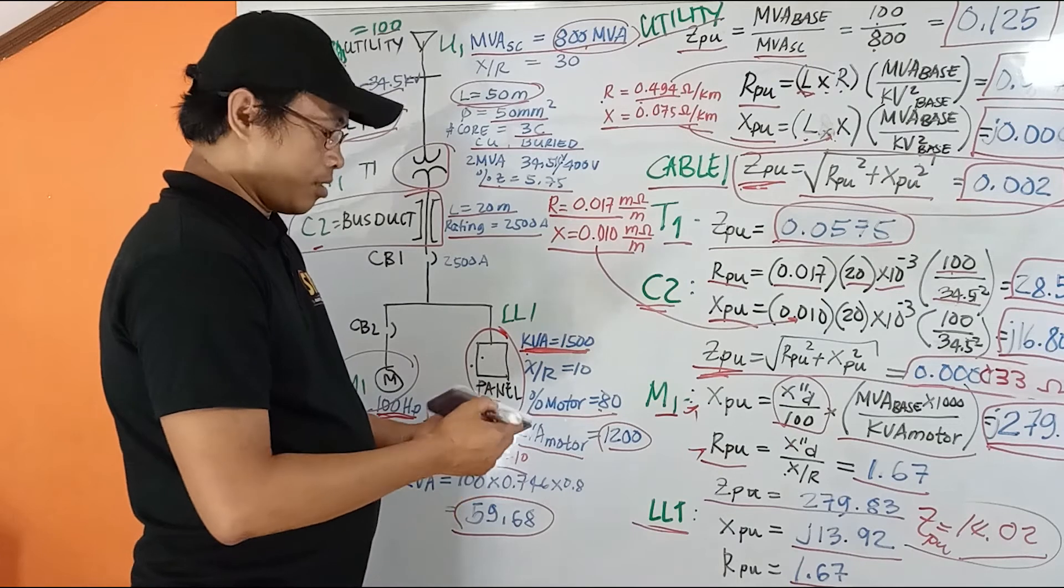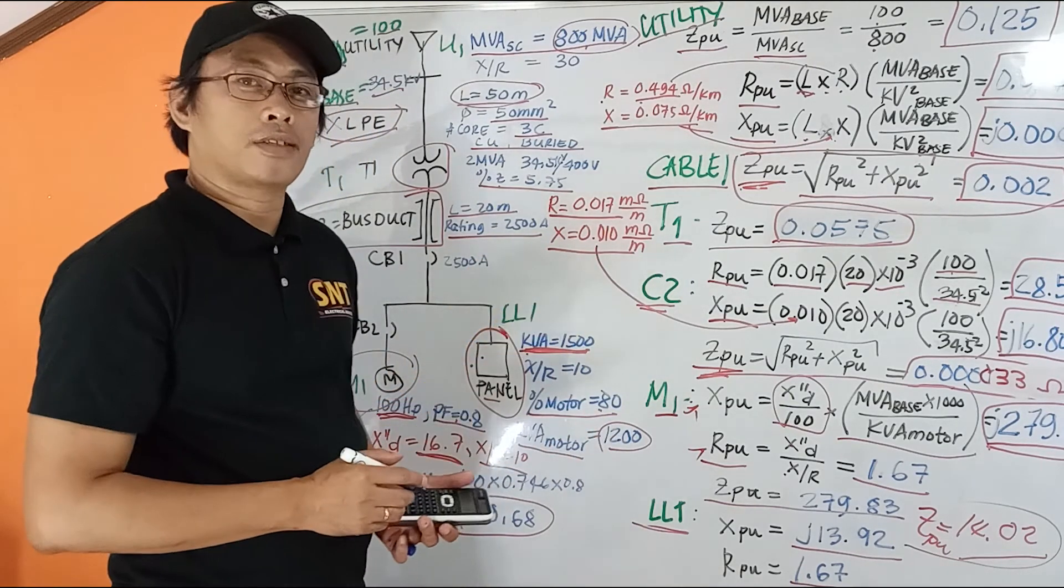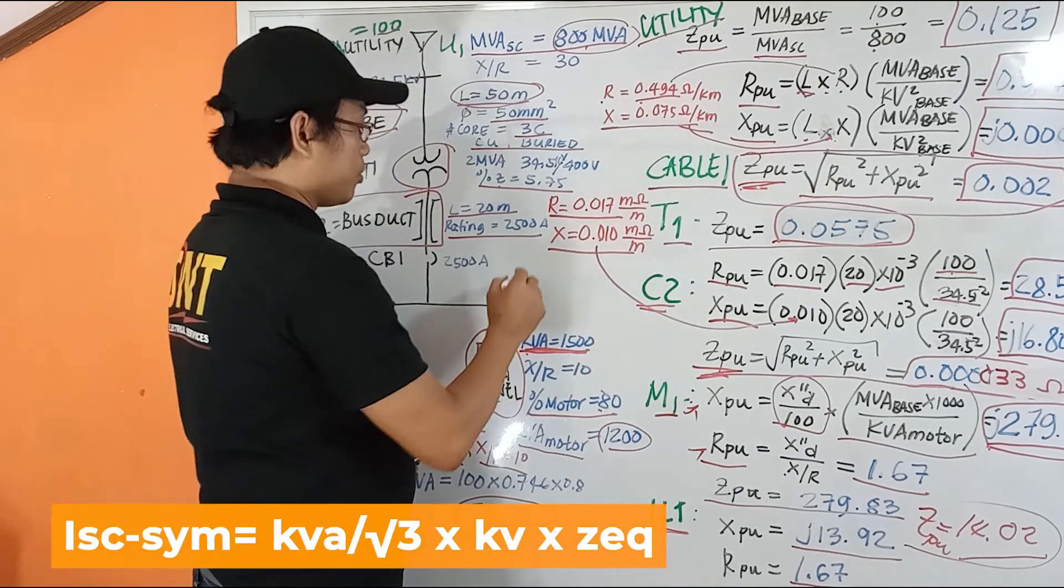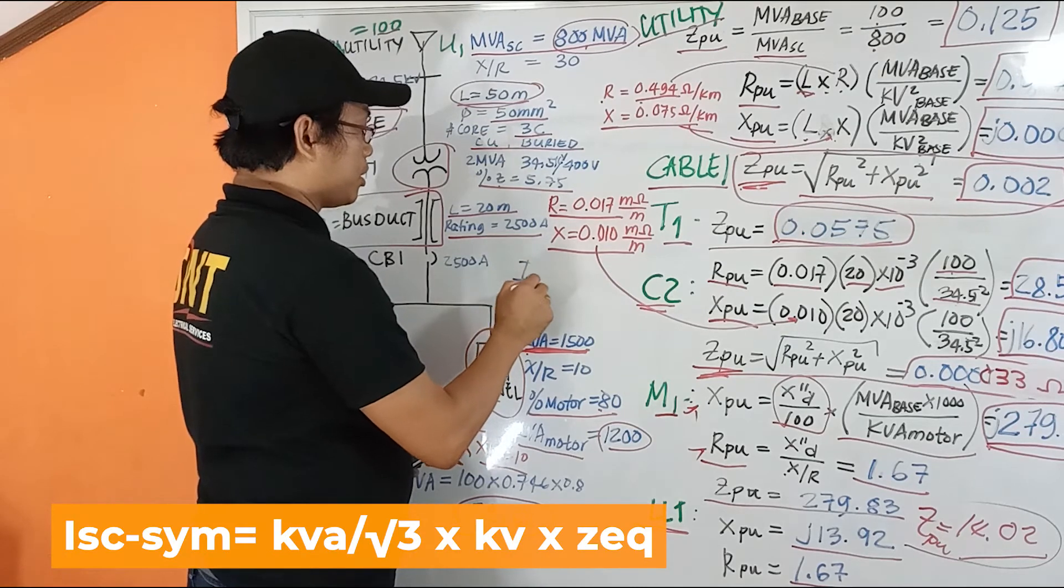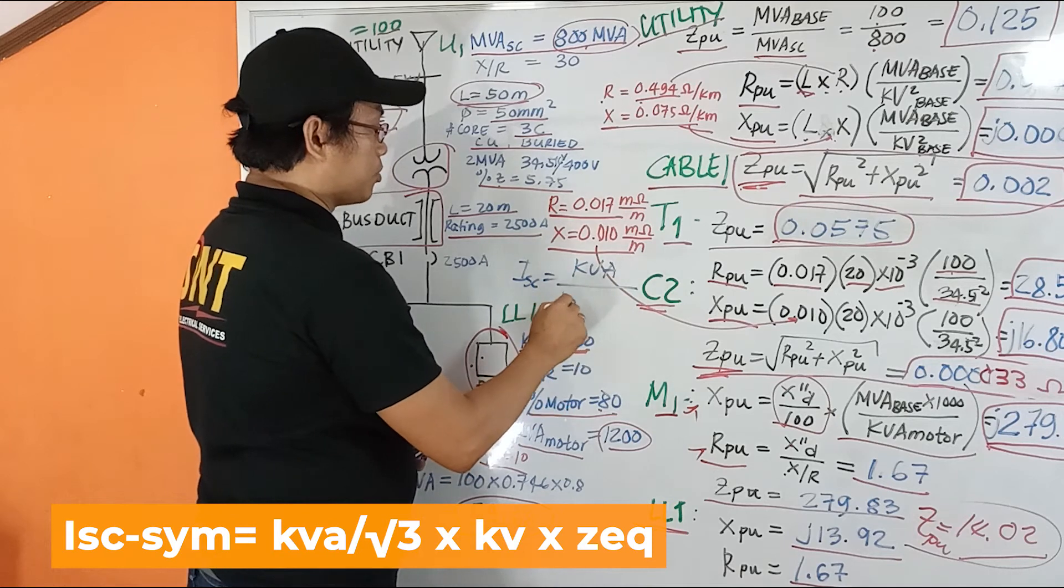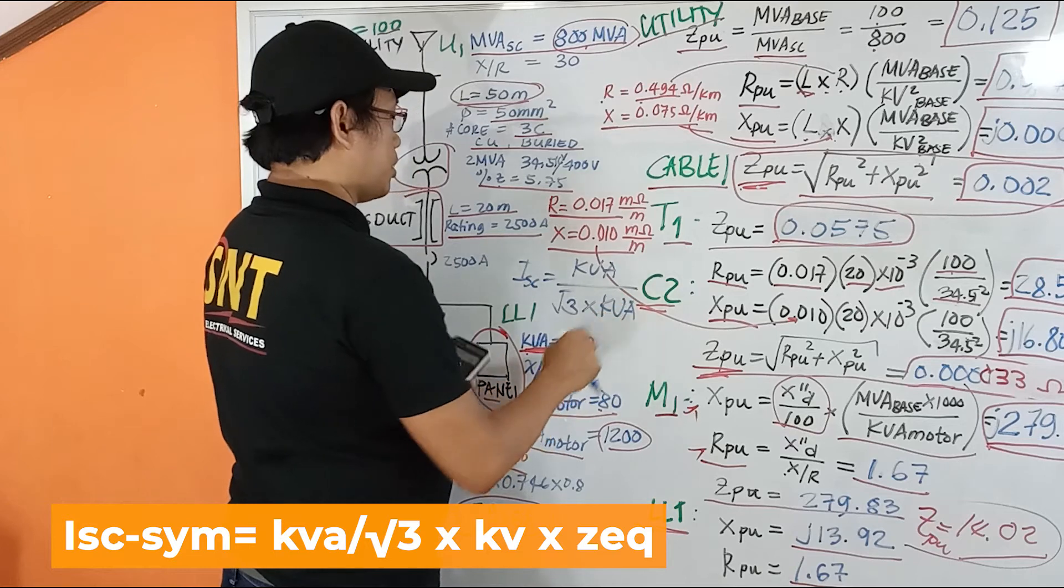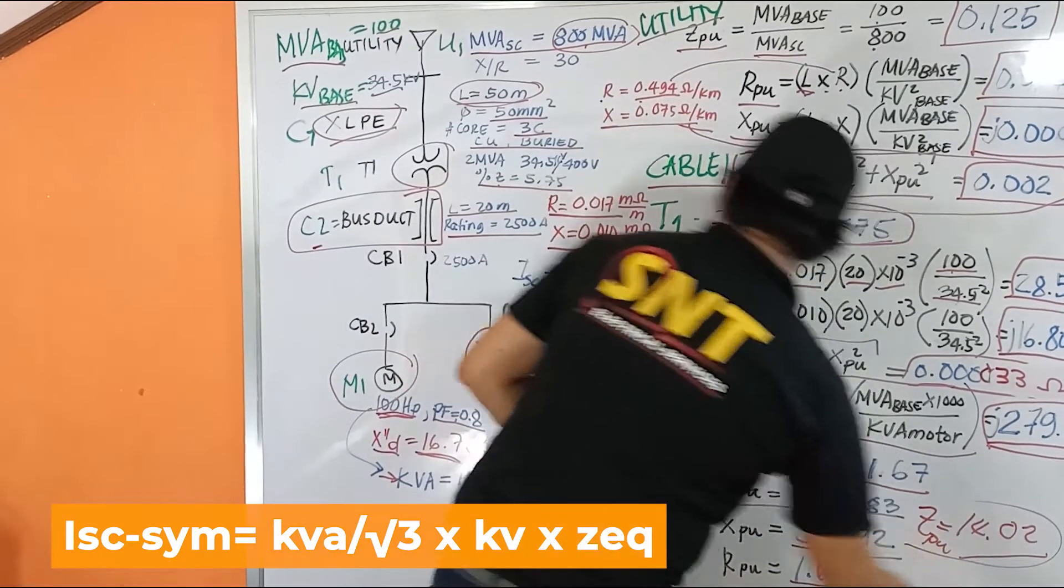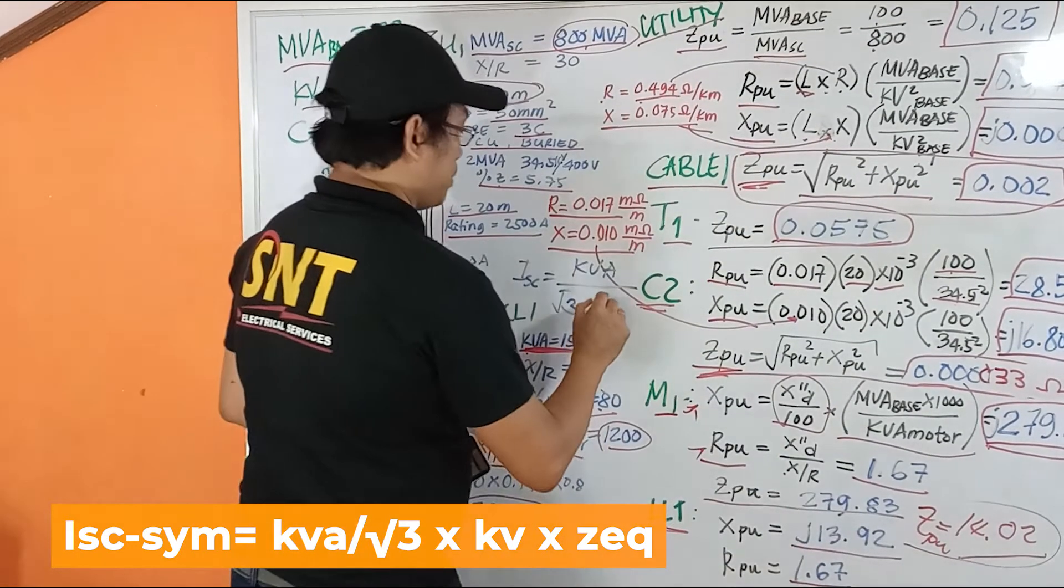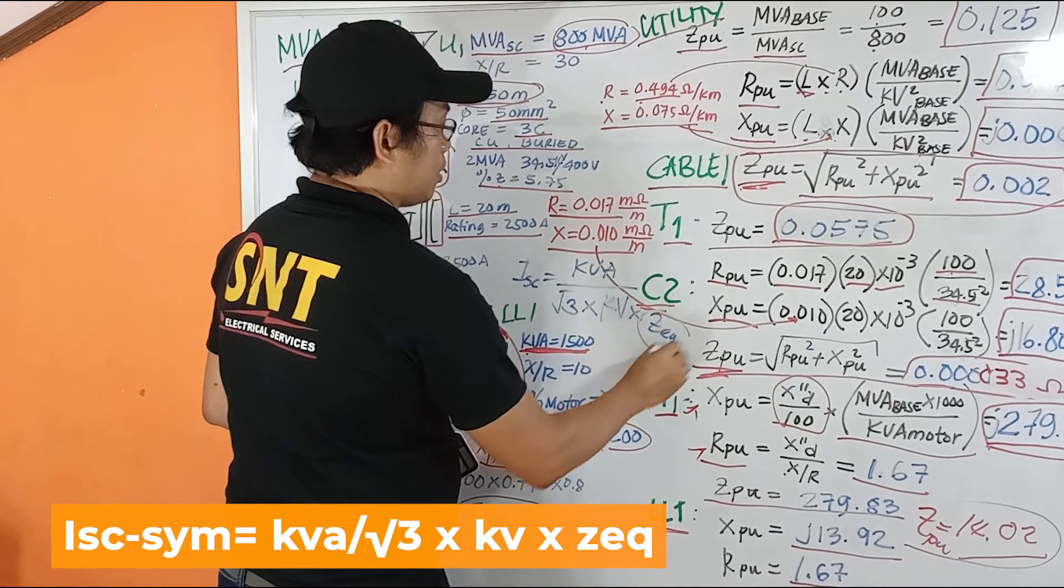So after that, we do the impedance analysis on our impedance diagram. At the end, we get to calculate the short circuit, which is the MVA over the square root of 3 times the kV times the equivalent impedance. Our goal is to get the equivalent impedance at a certain point.